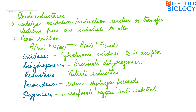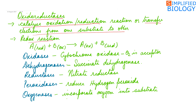Oxidoreductases: these enzymes catalyze oxidation-reduction reactions. You can say they transfer electrons from one substrate to the other — these are referred to as redox reactions, where a reduced substrate reacts with an oxidized substrate. The reduced one becomes oxidized while the other one becomes reduced.